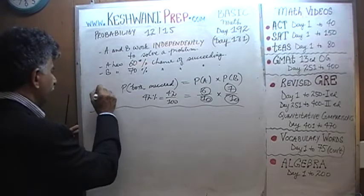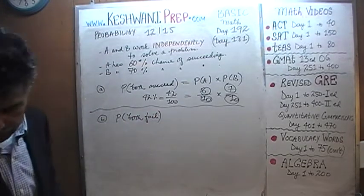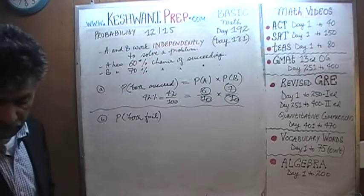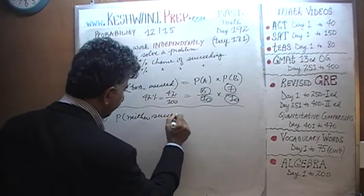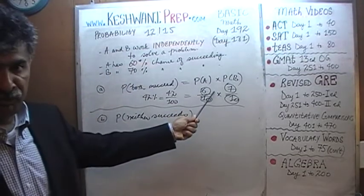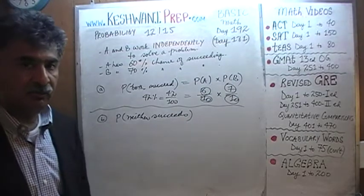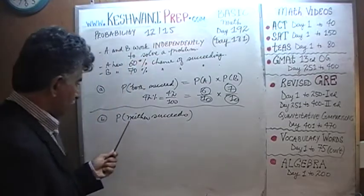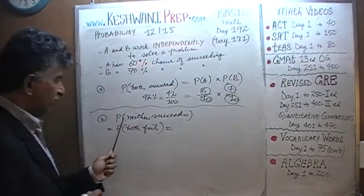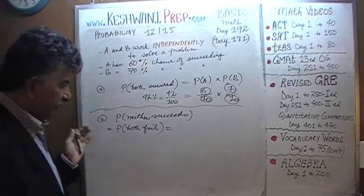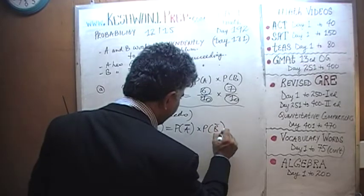Let's do the next problem: what are the odds that they both fail? What are the odds that neither of them succeeds? Same exact logic, same exact procedure. The only difference is that instead of multiplying their odds of succeeding, we're going to multiply their odds of failing. We indicate A will fail with a bar on top, times the odds that B will fail.